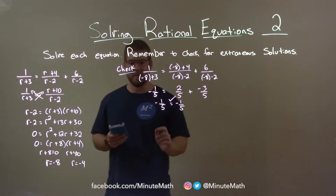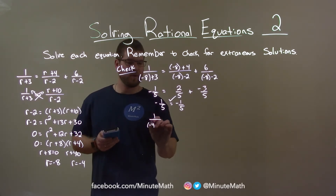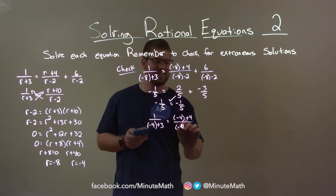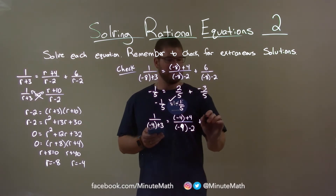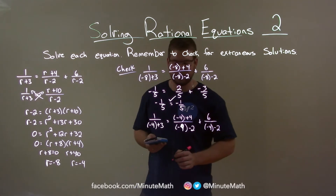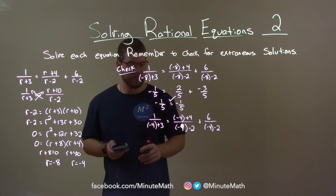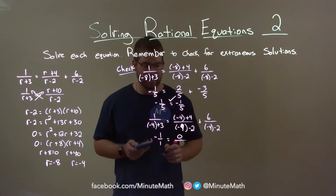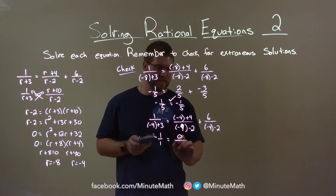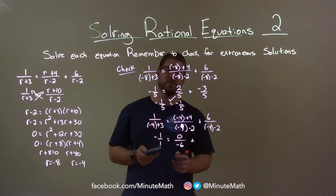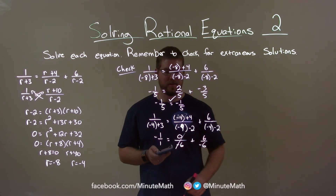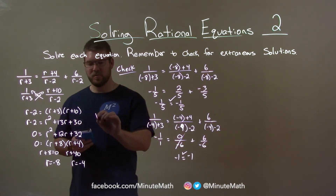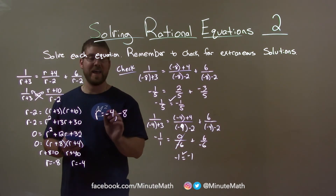But there are two numbers — we have to check the other one. Same idea: put negative 4 in for r. 1 over (−4 + 3) equals (−4 + 4) over (−4 − 2) plus 6 over (−4 − 2). 1 over (−4 + 3) is negative 1. The numerator −4 + 4 is 0, so that fraction is 0. And 6 over −6 is negative 1. So 0 + (−1) = −1. Left and right-hand sides are equal, so our two values for r are negative 4 and negative 8. They both are true.